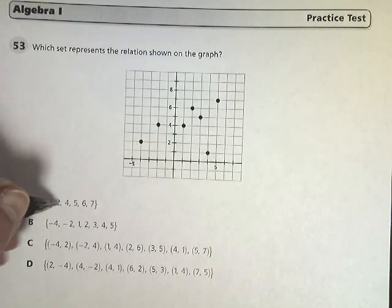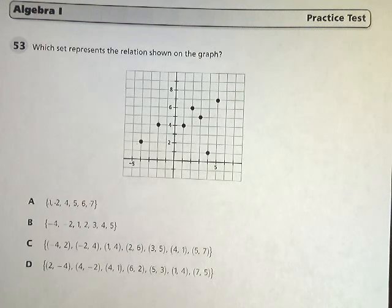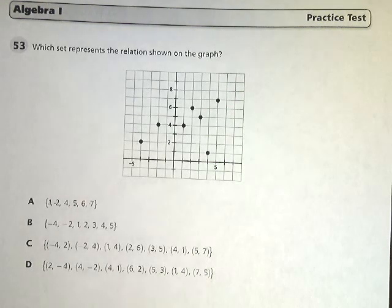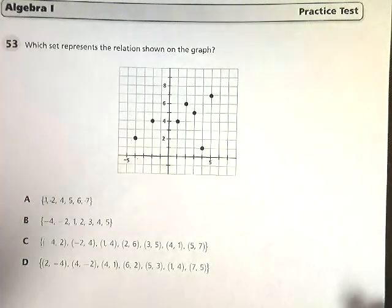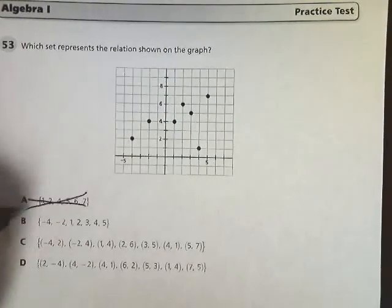So this is 1, 2, 4, 5, 6, 7. It doesn't really mean anything here. I'm sure that could represent some potential domain, or in this case it could represent the range, but it doesn't represent the points, so that's out.